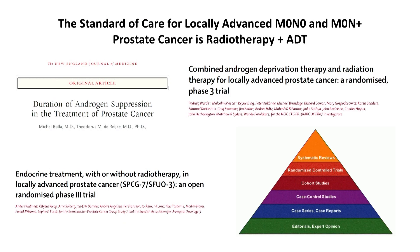What about M0 — N0 and M0 N+, high-risk localised disease? We have a very good portfolio of phase 3 trials looking at the standard of care. There's a hierarchy of evidence: at the top, randomised controlled trials and meta-analyses; at the bottom, case series and case reports. In radiotherapy with combination treatment, we have level one evidence — that is a clear standard of care.